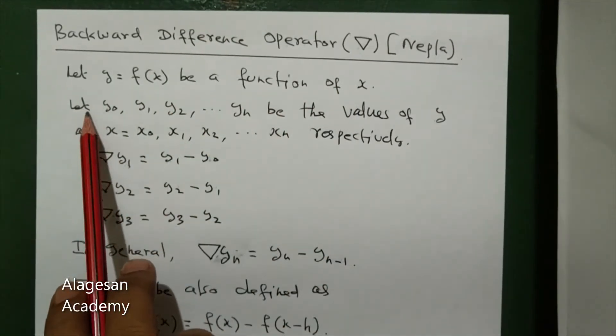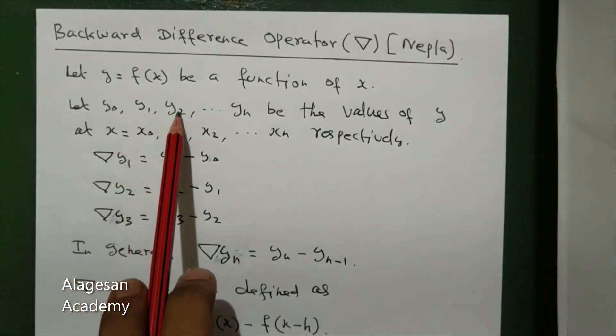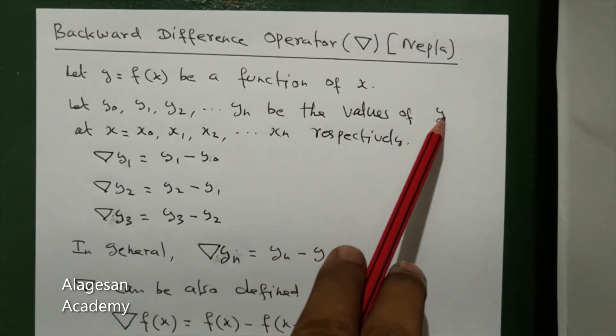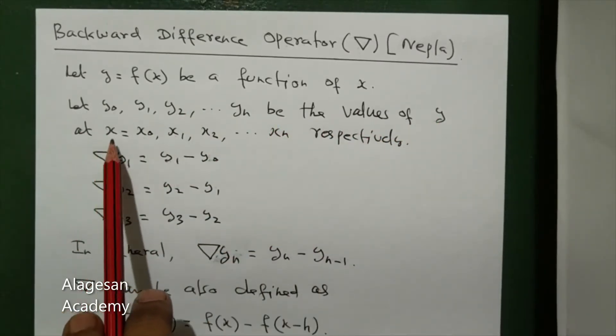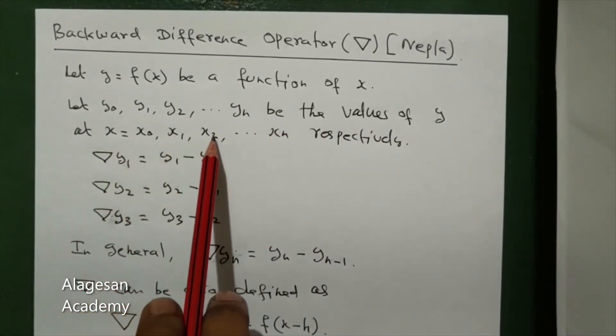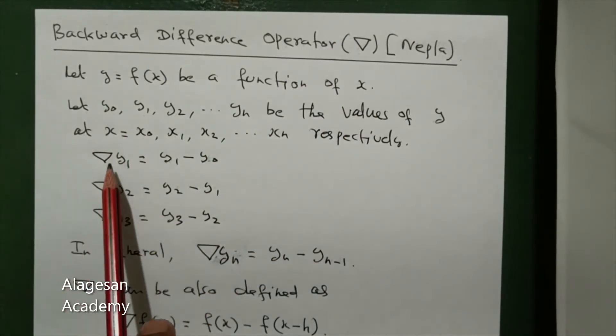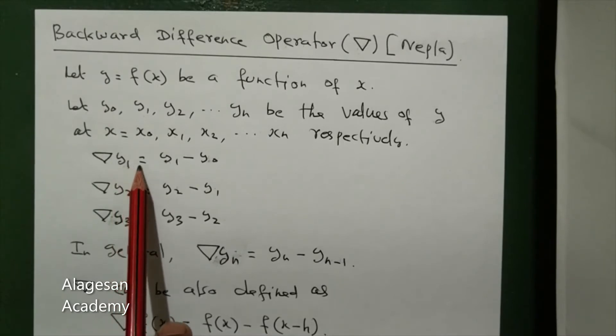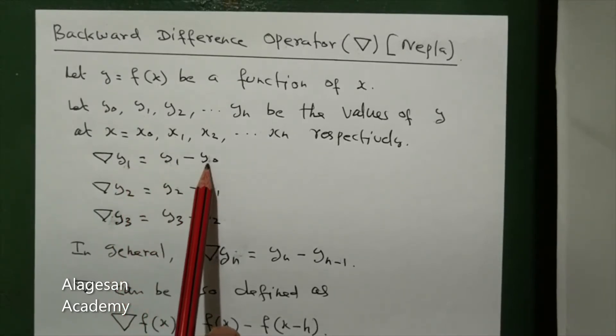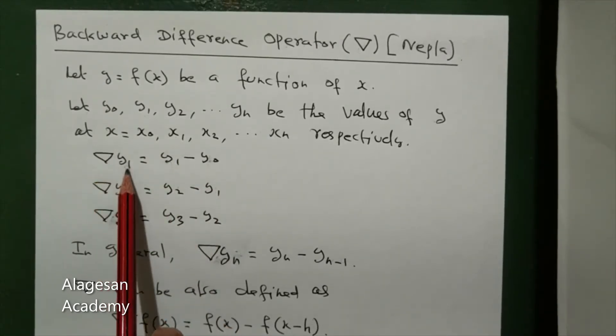Let y0, y1, y2, up to yn be the values of y at x equal to x0, x1, x2, up to xn respectively. Now nepla y1 is equal to y1 minus y0.